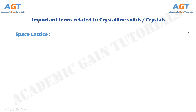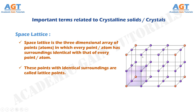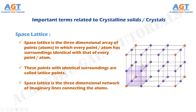Space lattice is the three-dimensional array of points, or atoms, in which every point has surroundings identical with that of every other point. These points with identical surroundings are called lattice points. Space lattice is the three-dimensional network of imaginary lines connecting the atoms. This figure demonstrates the space lattice where every point has surroundings identical with that of every other point.